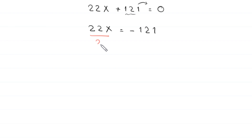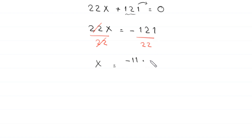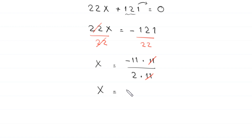Now we divide both sides by 22. The 22s cancel, and we get x equals negative 121 over 22. Since 121 is 11 times 11 and 22 is 2 times 11, the 11s cancel, giving us x equals negative 11 over 2. Now let's verify whether this value is actually a solution.